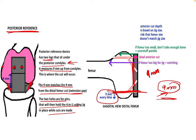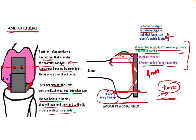If using the transepicondylar axis, no 3 degrees of rotation is needed. In posterior referencing, the posterior cut is fixed and the anterior cut is variable. If the femur is too small, we will end up overstuffing the patella because less femoral bone is cut. If the femur is too big, the jig will be too small, cutting more femur and resulting in notching of the anterior cortex. So the anterior cut is based on jig size, and a mismatch leads to these complications.